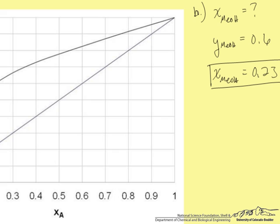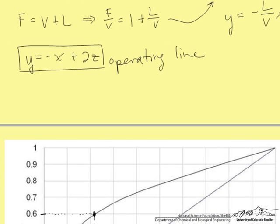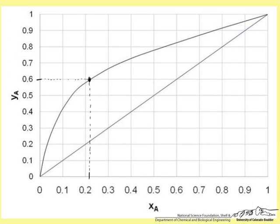Finally, for part C, what is the feed composition? In other words, we want to know what Z, the composition of methanol in the feed stream, is. We know from part A that the operating line is Y equals negative X plus 2Z. Let's plot that operating line.